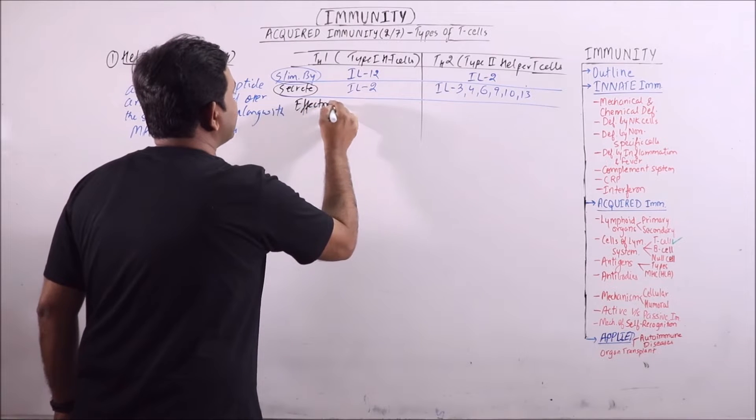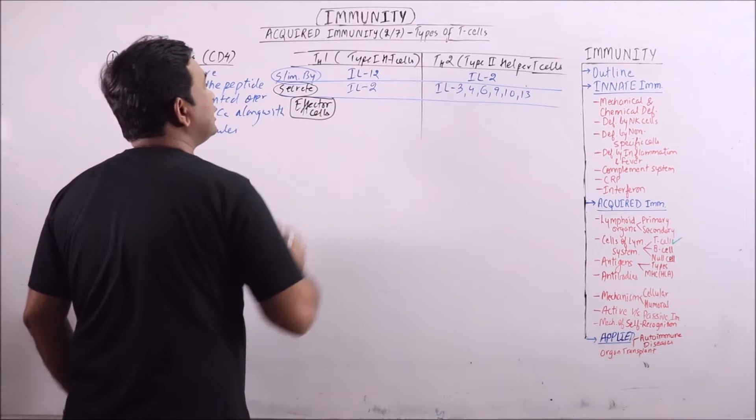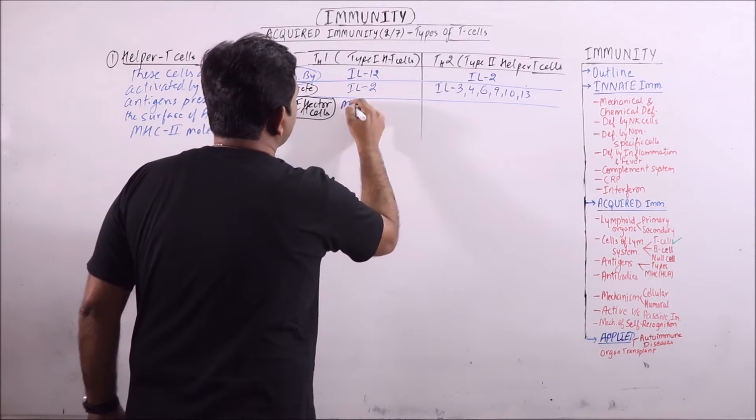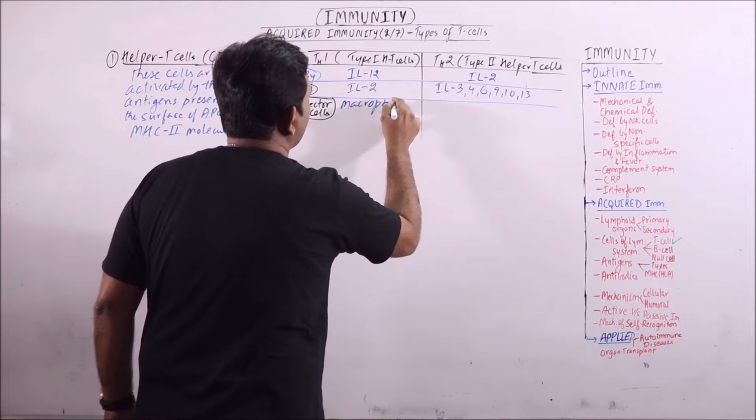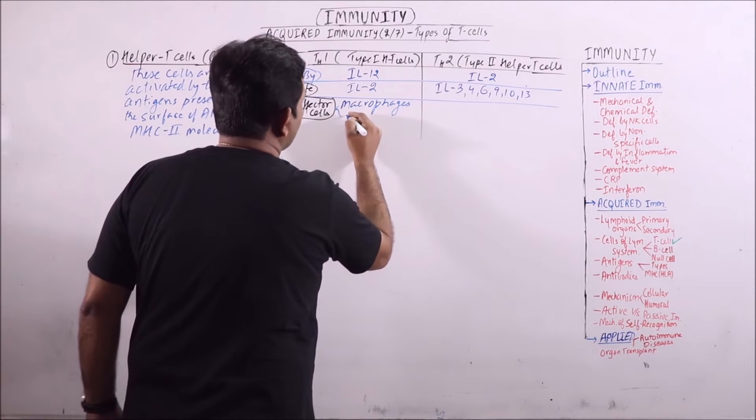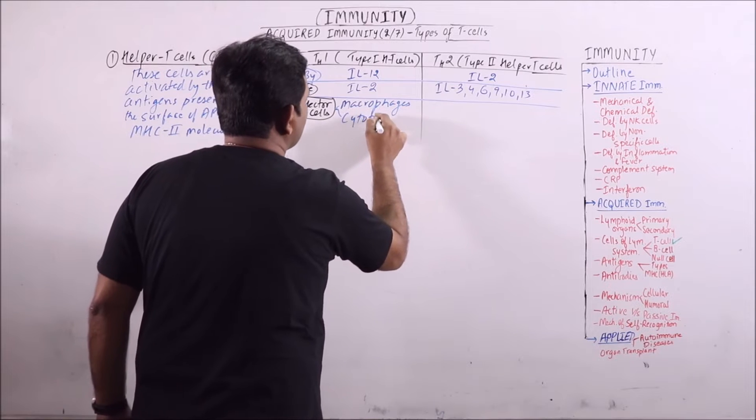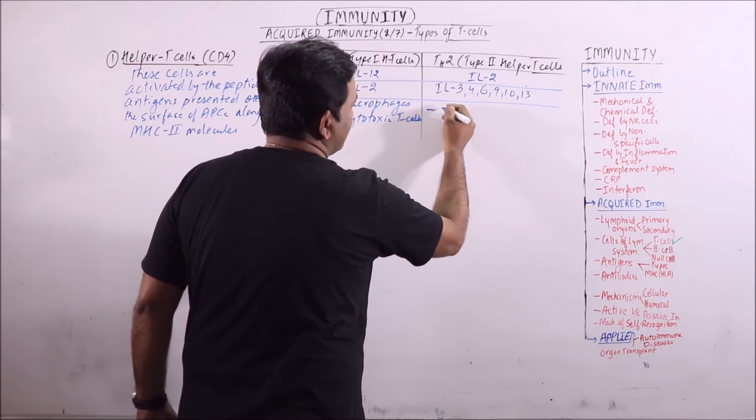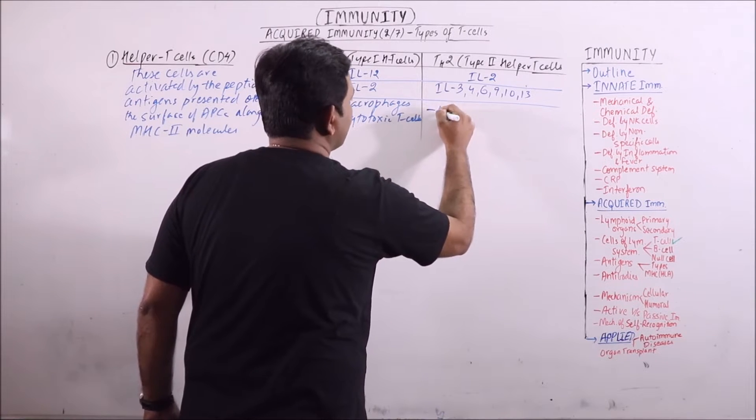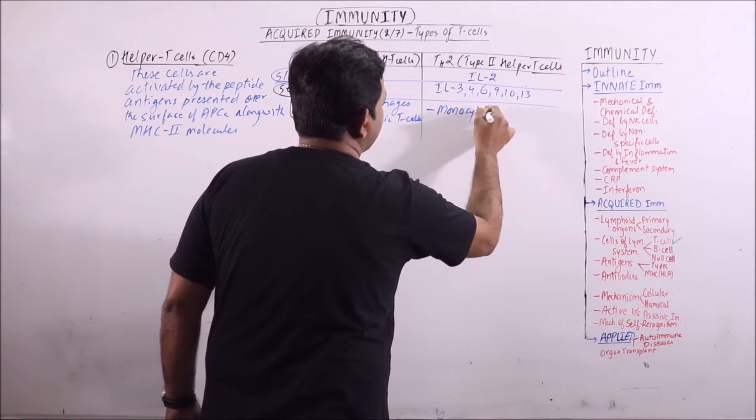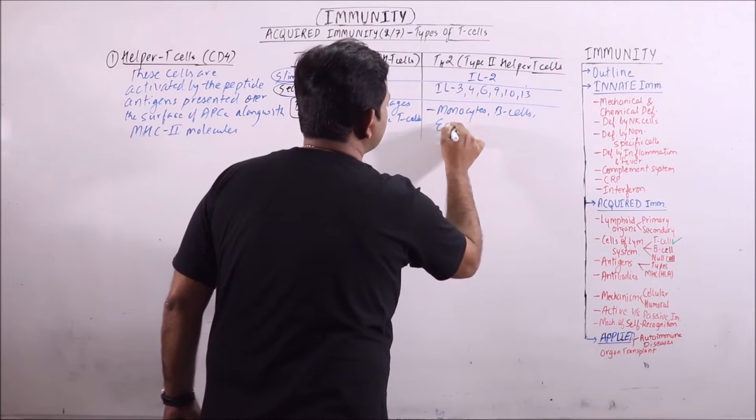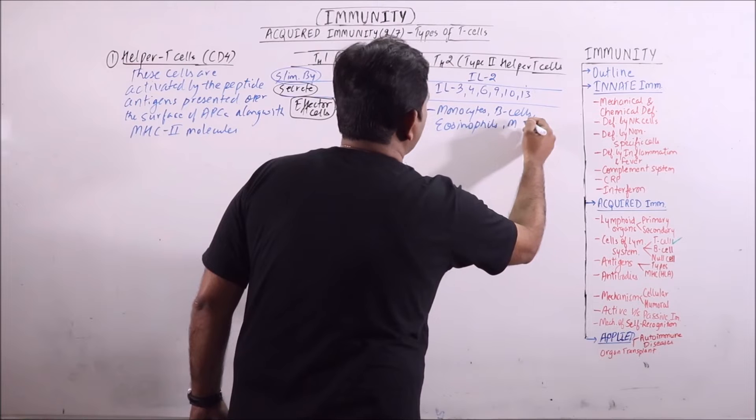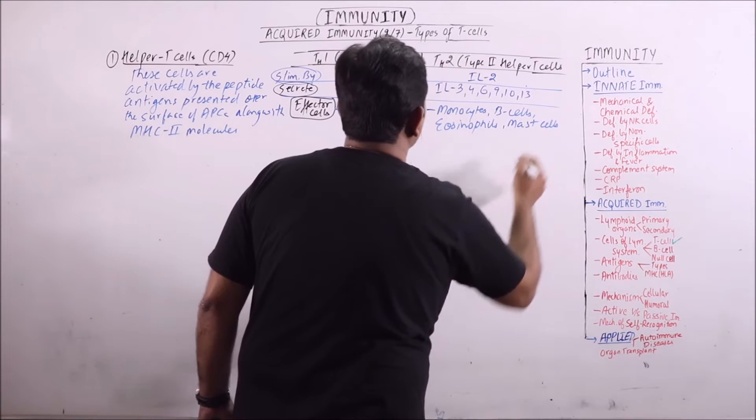What are the various effector cells on which these interleukins work? These stimulate the monocytes, B-cells, eosinophils and also the mast cells.